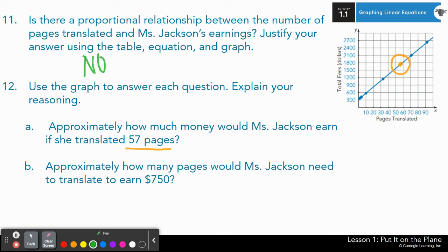Alrighty, for number 11, is this a proportional relationship? No, it is not, because a graph must show two things to be proportional. One, it must be a straight line, which it is, but it also must pass through the origin, and this one doesn't. So that is just one way you could have justified that answer. For number 12, just from looking at my graph, 57 is about where that point is I put on the graph. And then on my y-axis, if I were to guess, that's somewhere around $1,700, $1,750. So if you've got somewhere in between that range, then you're good to go.